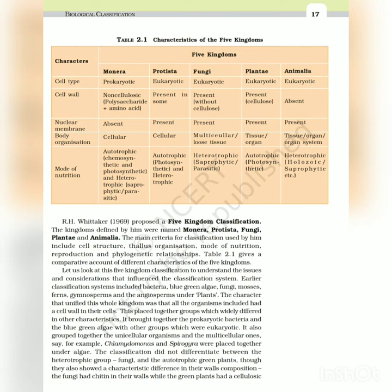Let us look at this five kingdom classification to understand the issues and considerations that influenced the classification system. Earlier classification systems included bacteria, blue-green algae, fungi, mosses, ferns, gymnosperms and angiosperms under plants. The character that unified this whole kingdom was that all the organisms included had a cell wall in their cells. This placed together groups which widely differed in other characteristics. It brought together the prokaryotic bacteria and blue-green algae with other groups which were eukaryotic. It also grouped together the unicellular organisms and the multicellular ones.